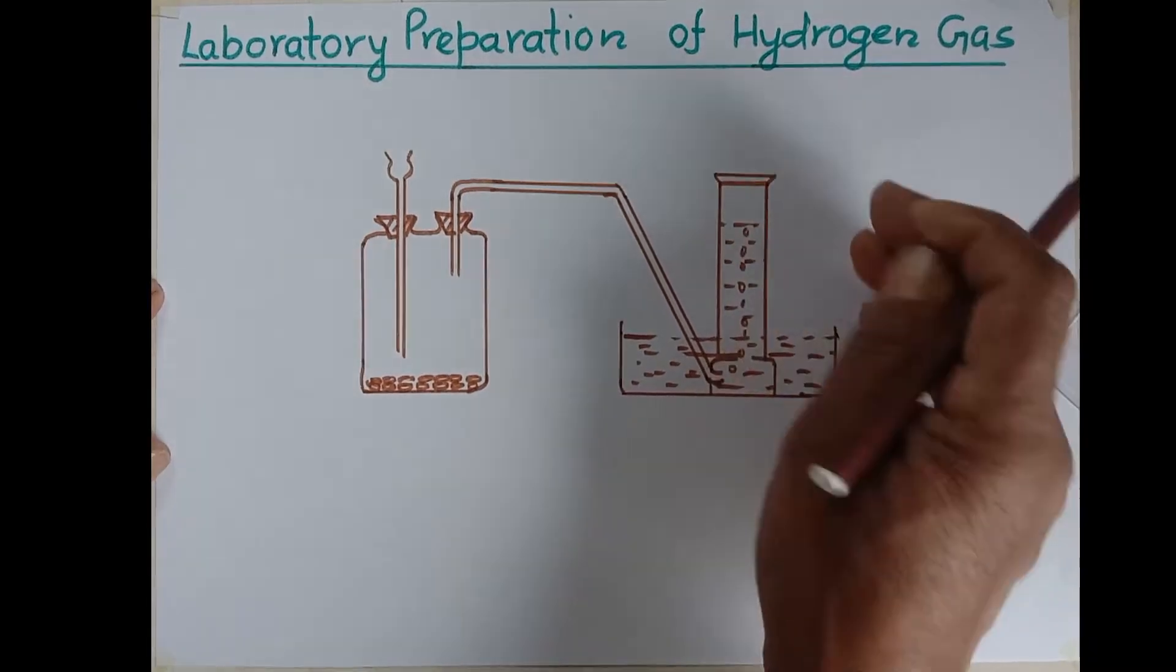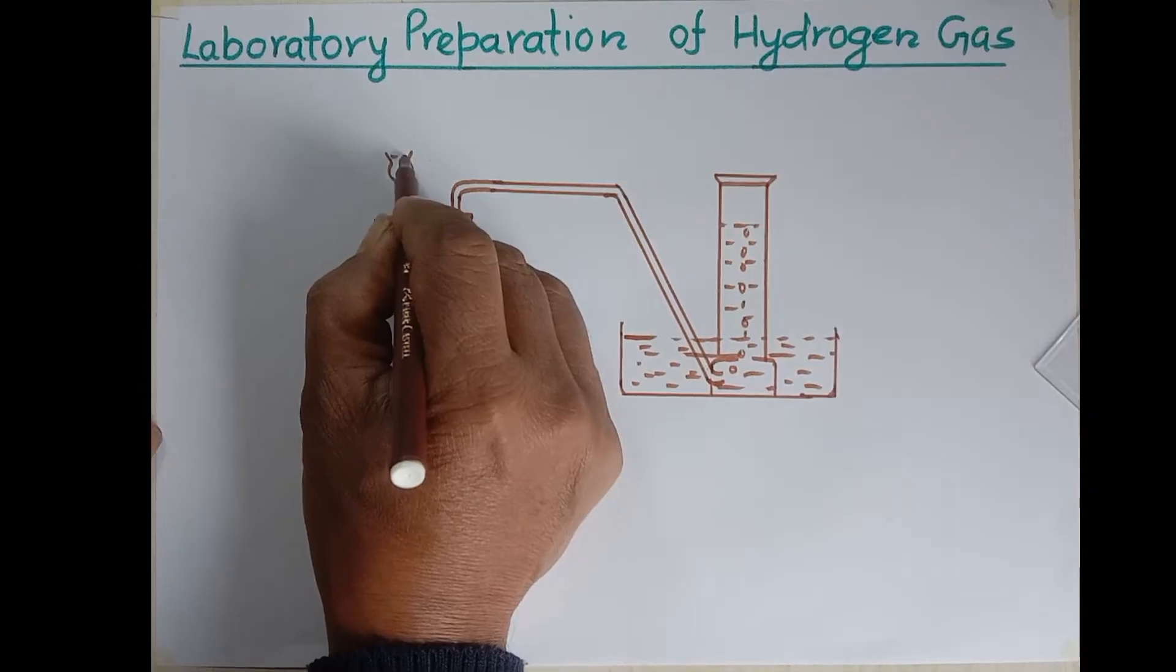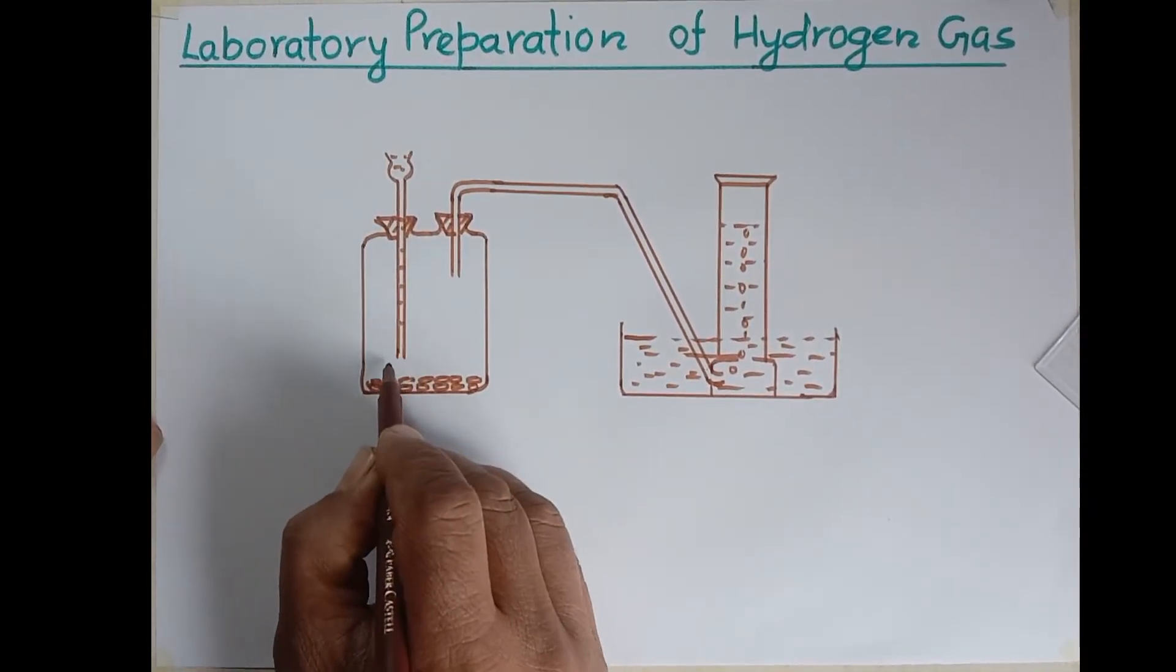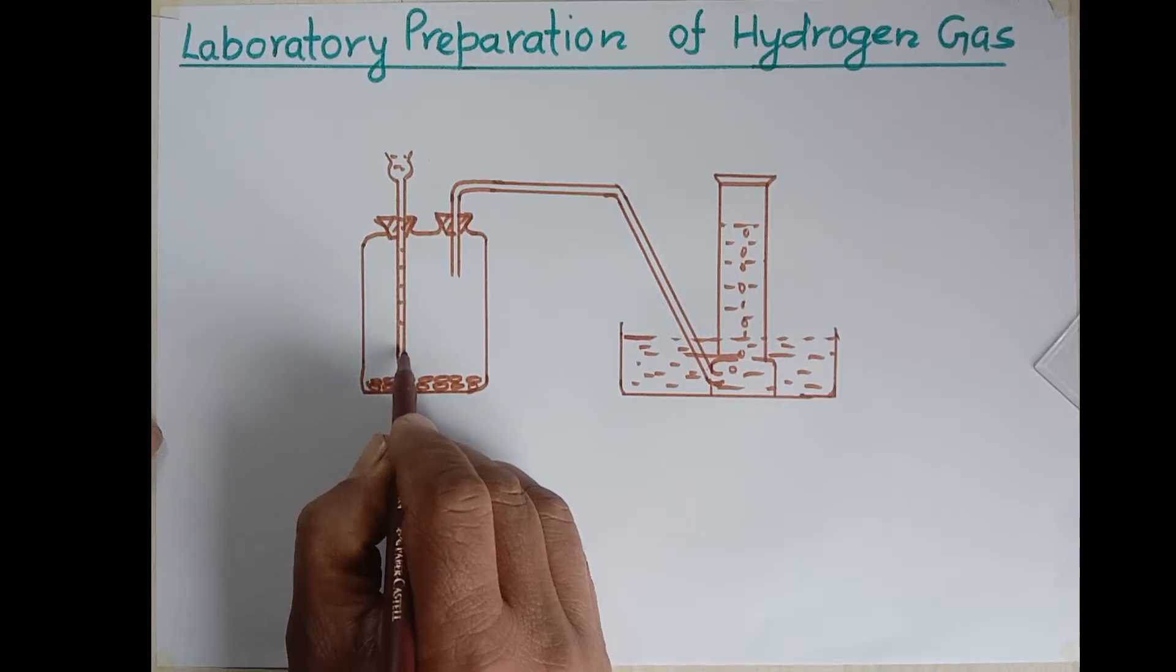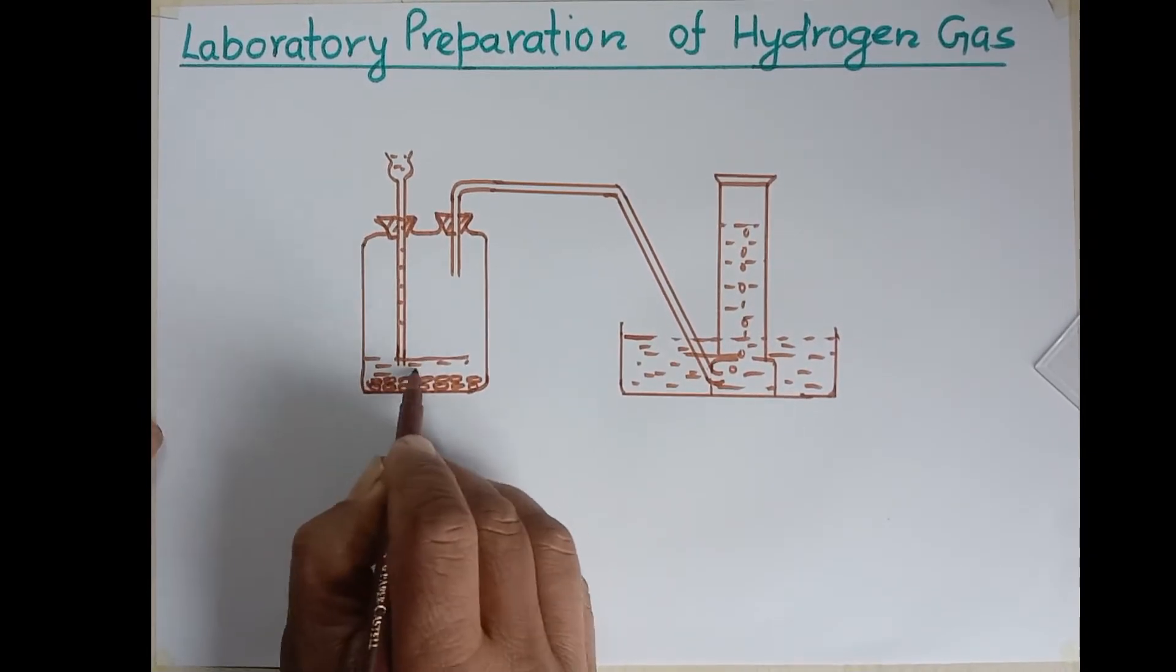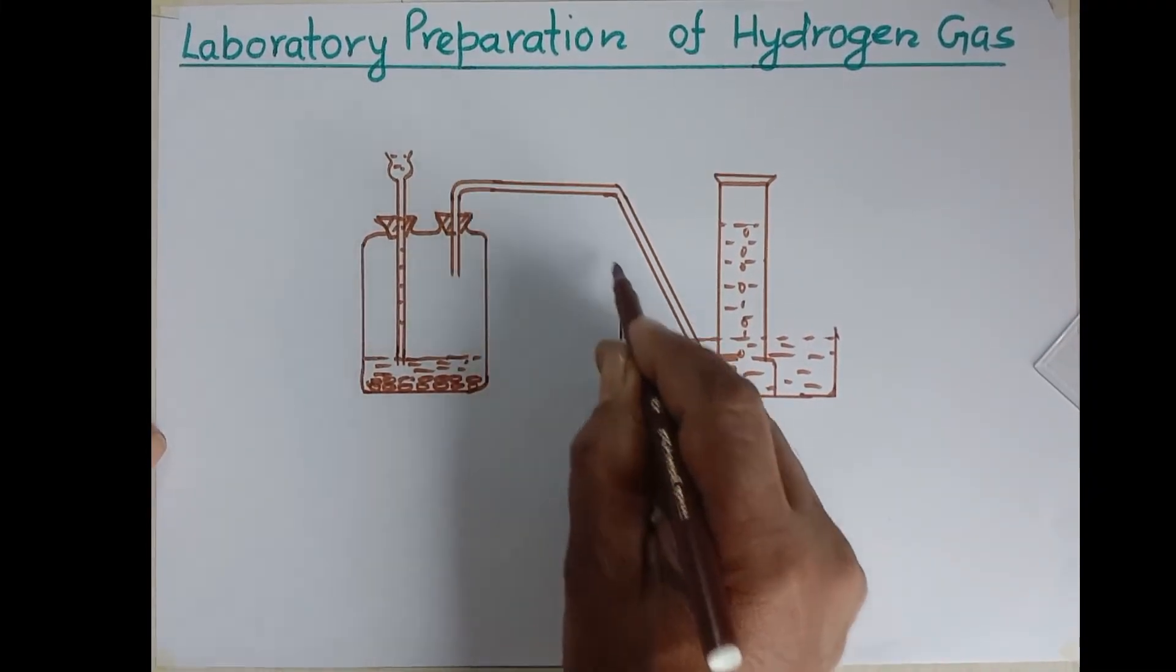Now after this, if we add hydrochloric acid here, then hydrochloric acid comes in contact with this zinc pieces and they react with each other to form hydrogen gas.